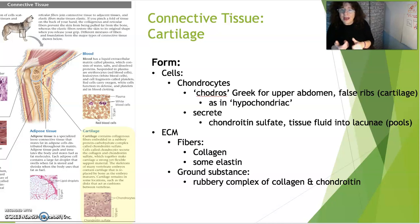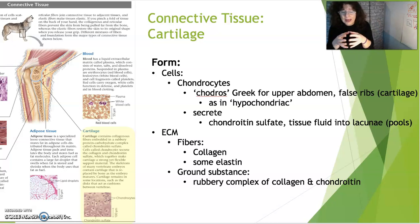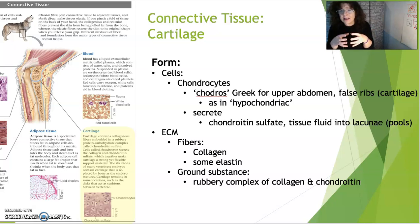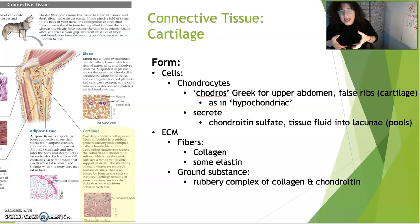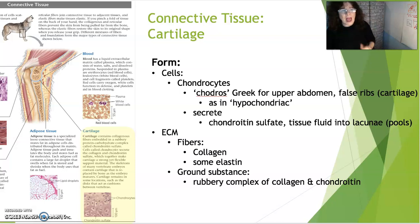The chondroitin sulfate and tissue fluid within the lacunae are all incorporated into the extracellular matrix, which is a combination of fibers and ground substance. The fibers of cartilage are primarily collagen, with some elastin. The ground substance is a rubbery complex of collagen, chondroitin sulfate, and tissue fluid — think about the vertebral discs in your spinal column to get a feel for that firm, rubbery substance.